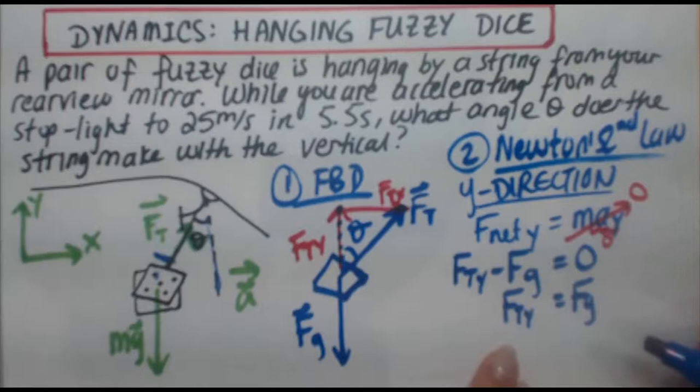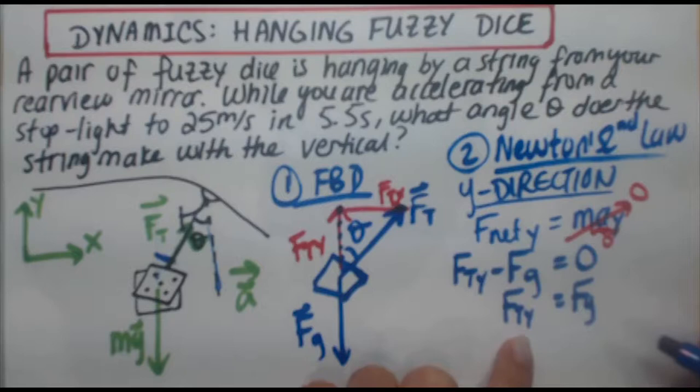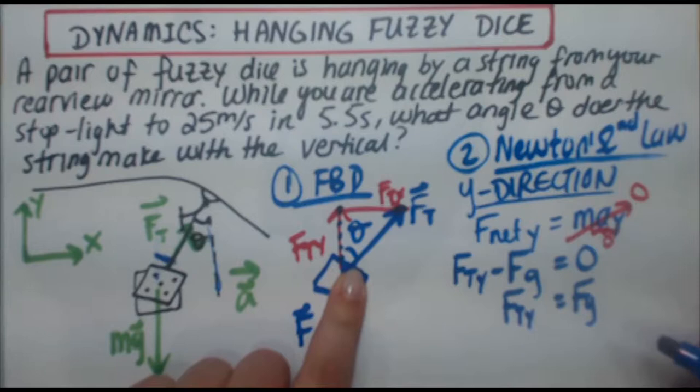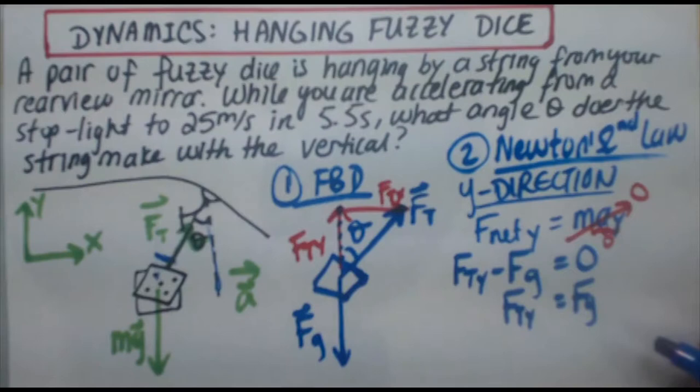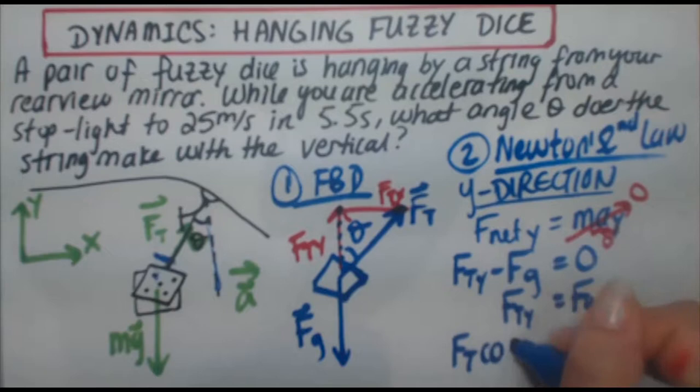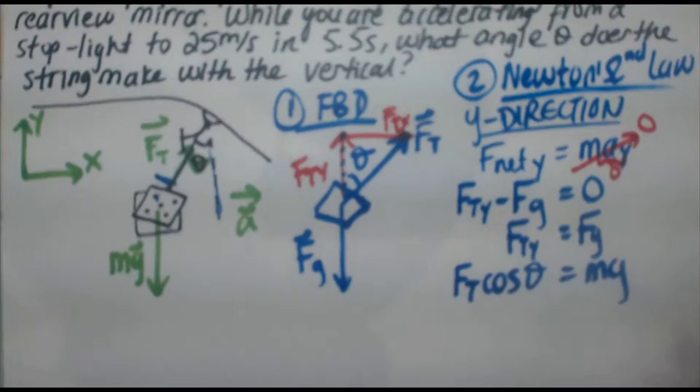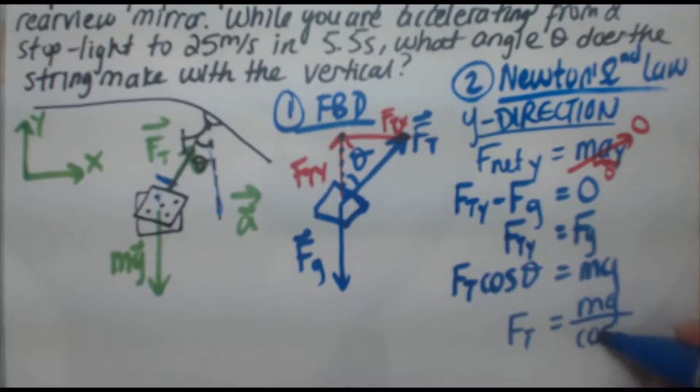Now this next step is the same for a lot of problems. Whenever you have a component of a force, you want to express it in terms of the original force, which in this case is represented by the hypotenuse of this triangle, times the sine cosine of the angle. In this case, FTy is adjacent to the theta, so it's cosine. So FTy is FT cosine theta equals mg, because after all weight is mg.